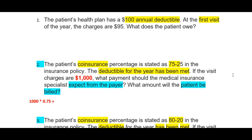Question 1 says the patient's health plan has a $100 annual deductible. At the first of the year, the charges are $95. What does the patient owe? I've highlighted the important information throughout these questions. The health plan for this patient has a $100 annual deductible. If this is the patient's first visit of the year, that means that their deductible has not been met.